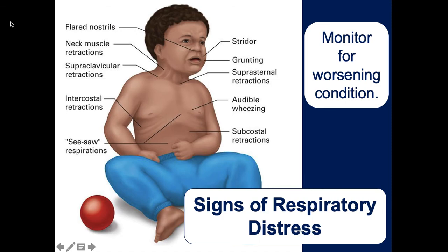Signs of respiratory distress in children, infants, and adults are generally the same: accessory muscle use, wheezes, retractions, rapid breathing, and grunting. The difference in young children is seesaw respirations: because infants under two are belly breathers — using the diaphragm rather than developed chest muscles — when they're in distress the chest and belly rise in opposite directions alternately. This is their form of accessory muscle use and is a very serious sign — the child is likely in respiratory failure.